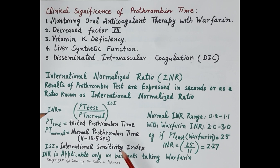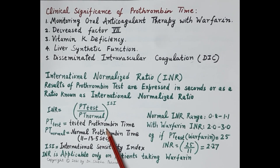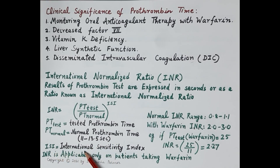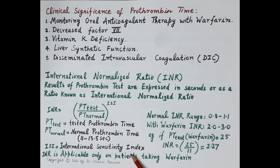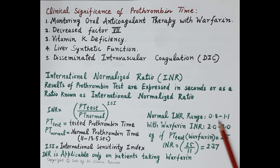INR is calculated by the formula: INR = (PT_test / PT_normal)^ISI, where PT_test is the prothrombin time of the patient on warfarin therapy, PT_normal is the normal prothrombin time (11 to 13.5 seconds), and ISI stands for international sensitivity index, obtained from the package insert of the thromboplastin reagent. In most cases, ISI is found to be 1.